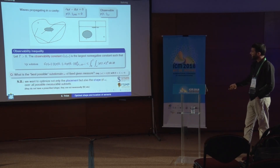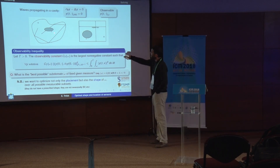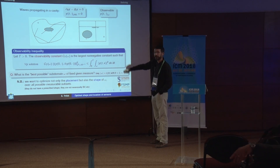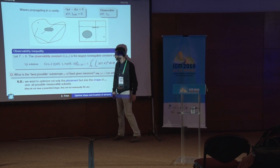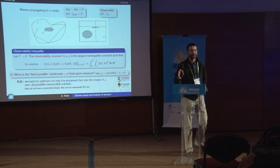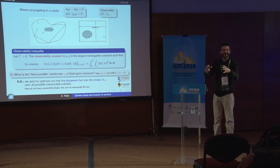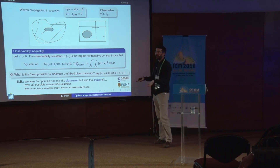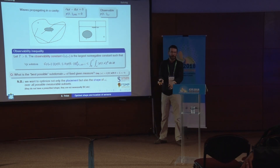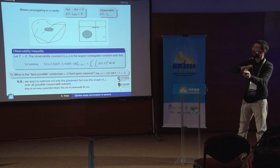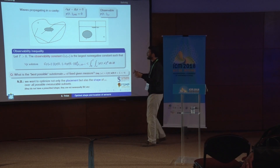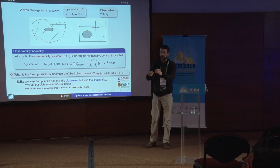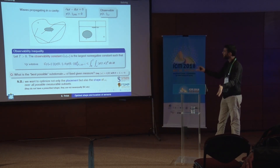The question we want to model is: you have the choice of designing the observation subset omega, and you would like to design it so that your observations will be most efficient. An obvious first remark — we have to limit the measure of omega. Otherwise the best possible subset is capital omega itself, which means placing sensors everywhere. But sensors are costly, and you want to optimally design a certain amount of sensors so that from partial measurements you reconstruct the whole solution at best.